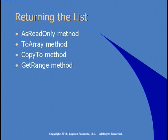The getRange method creates a shallow copy of a range of elements in the list, returning a new list. It copies the top-level objects — if they point to other objects, those aren't deeply copied. The sort method uses the default IComparable interface to sort items; if you want non-default order you must provide an IComparer class. The reverse method reverses the order of the contents of the list.